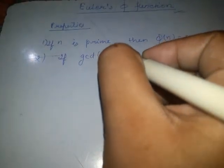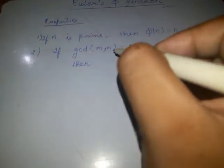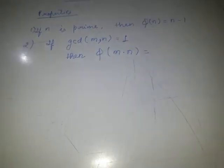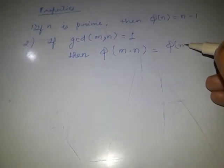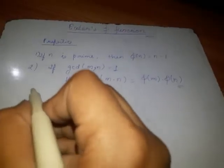The second property is: if the greatest common divisor of m and n equals 1, then phi of m into n equals phi m times phi n. So this is also a very important property.